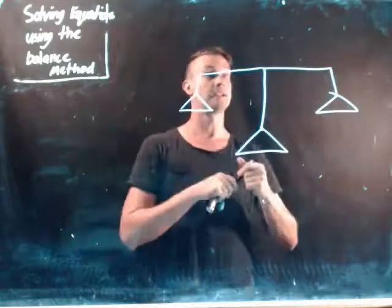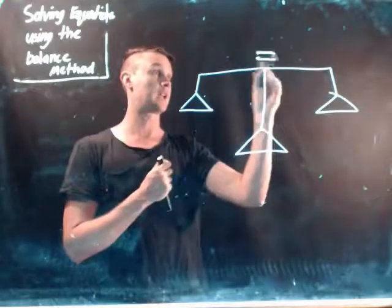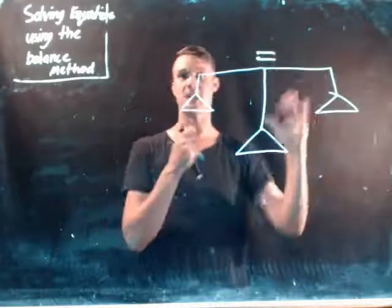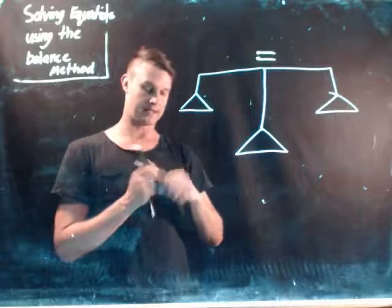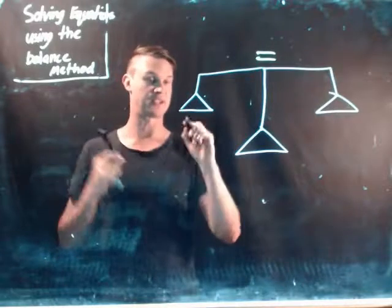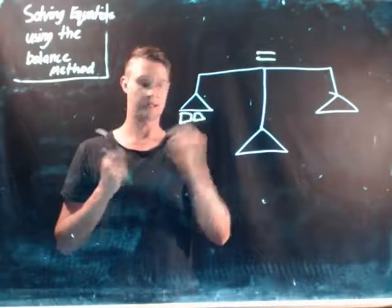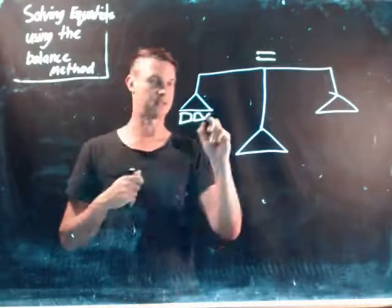Now the way that we use scales is that we want to make sure that they're even. If we represent the middle as the equal sign, both sides need to be equal. So let's just say that we had two biscuits and about six lollies here.